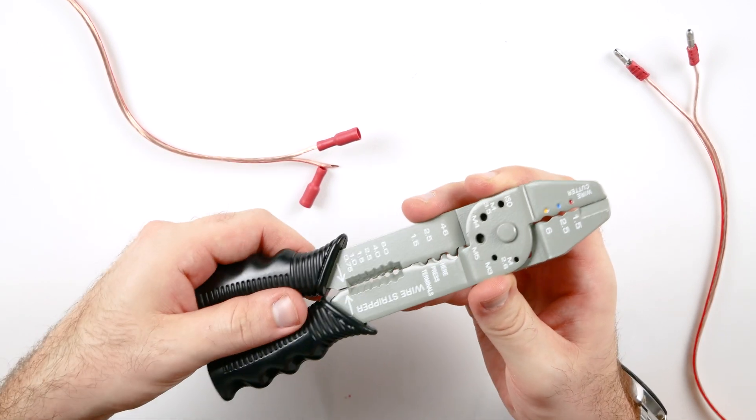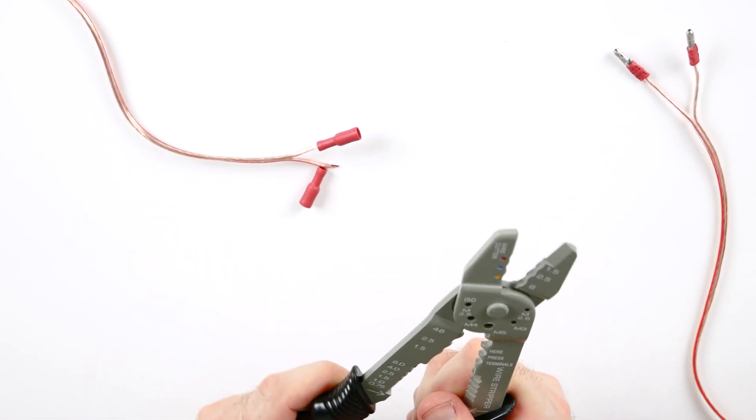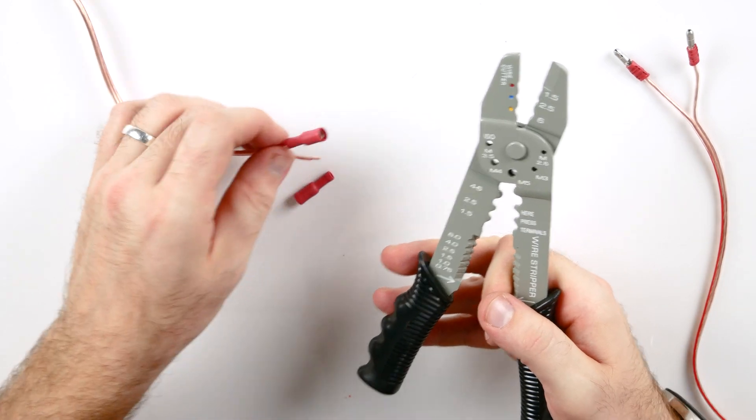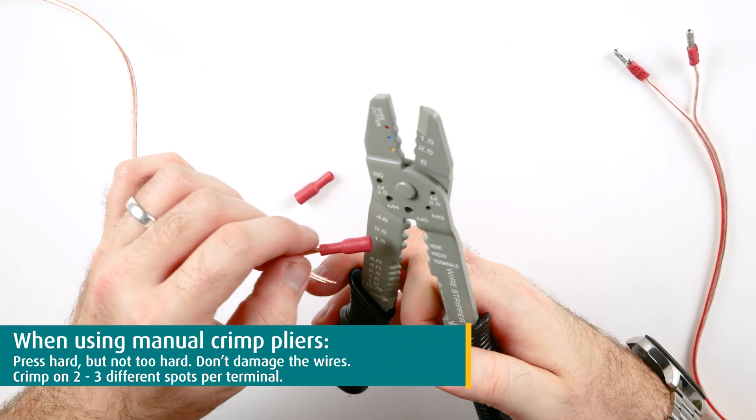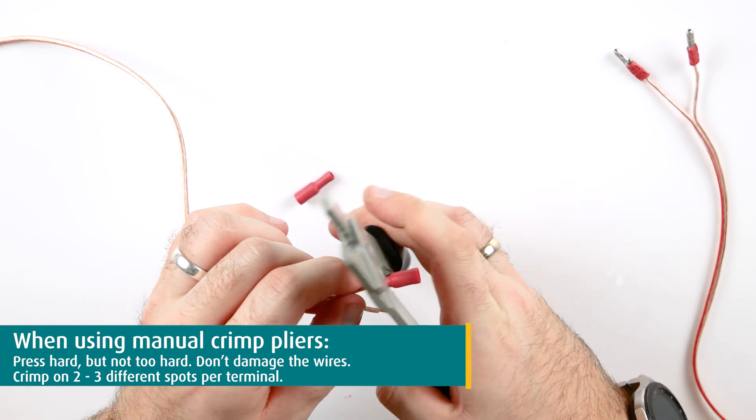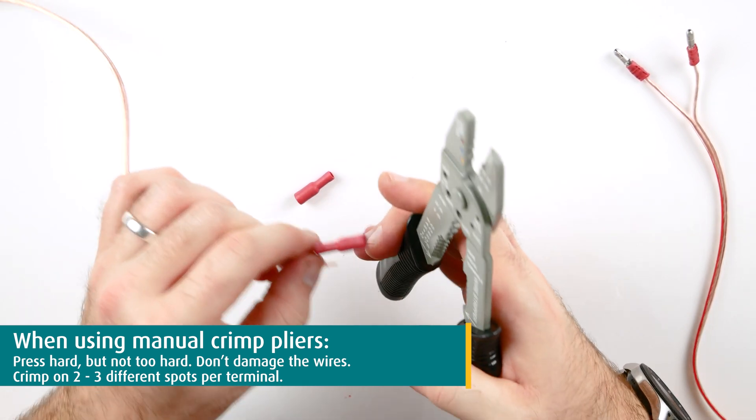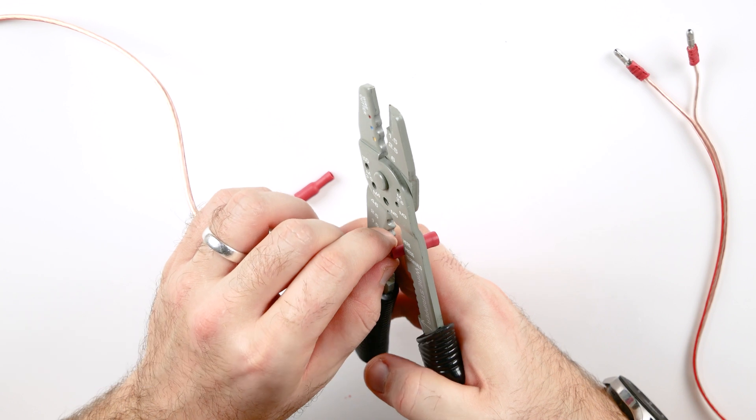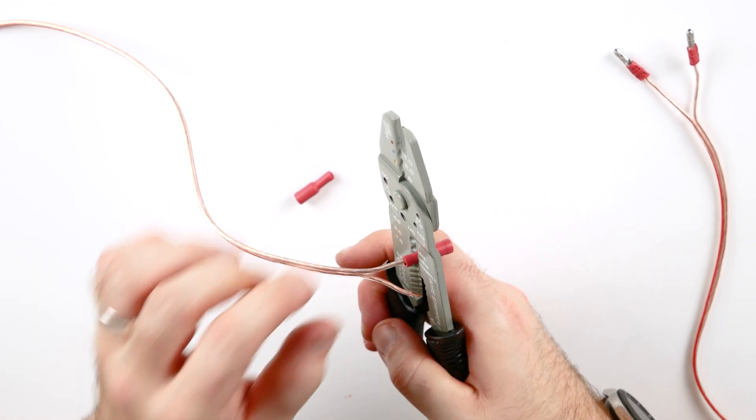This time I am using manual crimp pliers. It is not a big difference, just make sure to press hard enough, but not too hard, because you don't want to damage the wires. It is not very complicated though, so you will probably get it right in the first try.